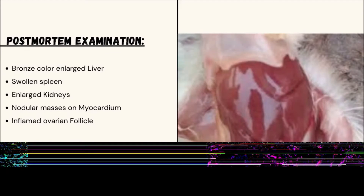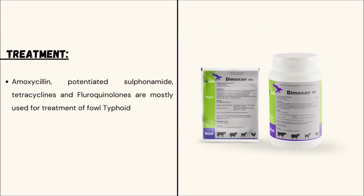Post-mortem examination of foul typhoid reveals bronze-colored enlarged liver, swollen spleen, enlarged kidneys, nodular masses in the myocardium, and inflamed ovarian follicles.